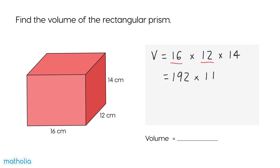192 times 14 is 2688. The volume of the rectangular prism is 2688 cubic centimetres.